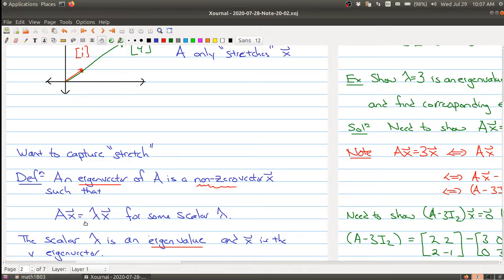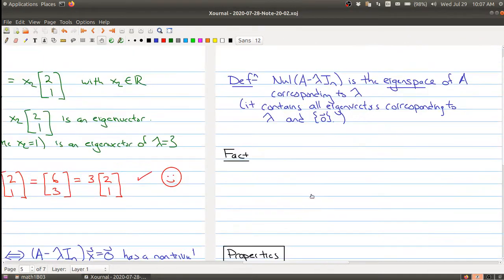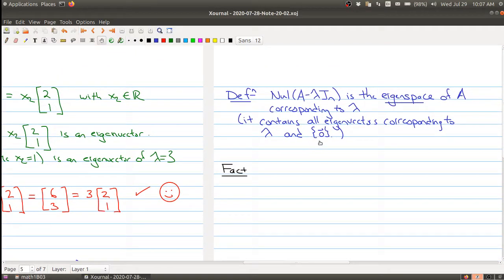So the zero vector always satisfies this equation. If I put zero in for x, I'm okay, I get a true statement, but I'm looking for the non-zero values. So the eigenspace of an eigenvalue contains the zero, but it also contains all the things that we're interested in.